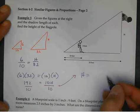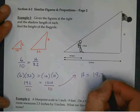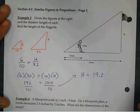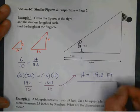What does H equal? How much? All right, 19.2. And what's our units of measure? Feet. Feet.